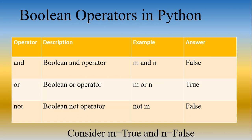Python has three Boolean operators: the Boolean and operator, Boolean or operator, and Boolean not operator, represented by 'and', 'or', and 'not' respectively.